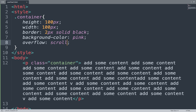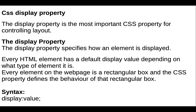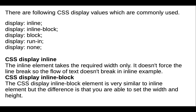Next property is the display property — the most important CSS property for controlling layout. The display property specifies how an element is displayed. Every HTML element has a default display value depending on what type of element it is. Every element on a web page is a rectangular box and the CSS property defines the behavior of that rectangular box. The syntax is: add the display property and its value.